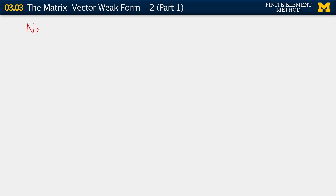We'll continue with our establishment of the matrix-vector weak form. Before we plunge onward, I should clarify some notation. I've been using this symbol — it means 'since' or 'because.' I realize it may be slightly archaic notation that has fallen by the wayside, but I tend to use it still.